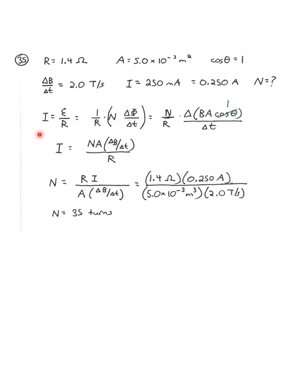We can start by using current equals E over R, voltage over resistance, which is 1 over resistance times N delta phi over delta T. And we're going to isolate algebraically N. So, that becomes N over R times delta BA over delta T. Once again, because of the perpendicular coil, cosine theta is just 1. And notice how I've put delta B over delta T together, because that's a quantity that is known. So, we have current equals NA times delta B over delta T divided by R. Solve that algebraically for N. We get R times I over A delta B over delta T. And then, we can plug in all those quantities, and we get 35 turns.